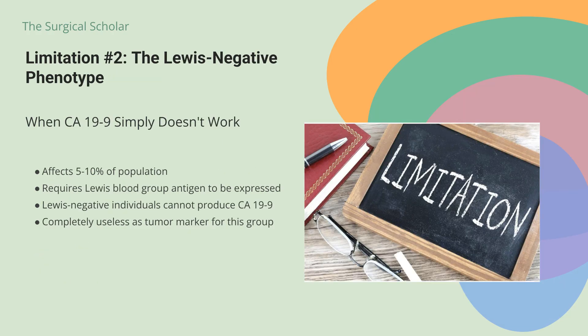Here's a limitation that affects an estimated 5–10% of the population. CA-19-9 requires the presence of the Lewis blood group antigen to be expressed. If you have a Lewis negative phenotype, your body simply cannot produce CA-19-9, making these levels completely useless as a tumor marker for you — even if you have pancreatic cancer. This genetic limitation means that roughly 1 in 10 to 1 in 20 people will never have elevated CA-19-9 levels.